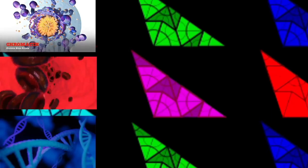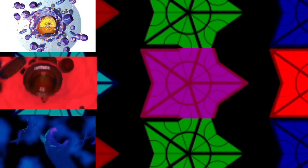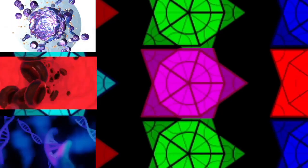Mitosis is a part of the cell cycle in which replicated chromosomes are separated into two new nuclei. Cell division gives rise to genetically identical cells in which the total number of chromosomes is maintained.